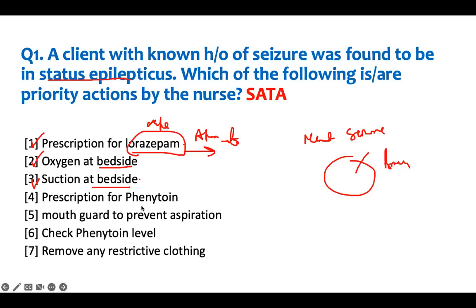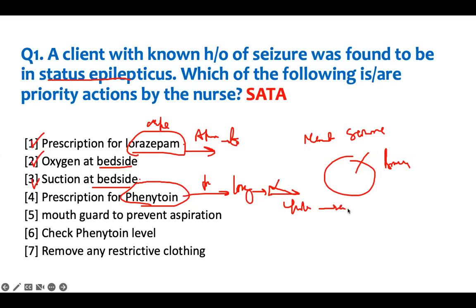Prescription for phenytoin — this is a trap. This is a long-acting maintenance medication. You need to check levels to make sure they're in normal range, and it takes four to six weeks to achieve therapeutic levels. That is why it is for maintenance — patients take it every day to prevent seizure. But now that they're seizing, that medication isn't working. They were already taking it and now they're seizing, so you need something that can take care of the problem right now. Therefore, phenytoin is wrong.